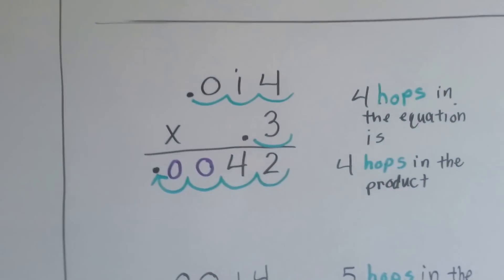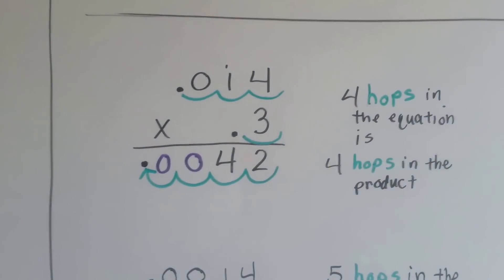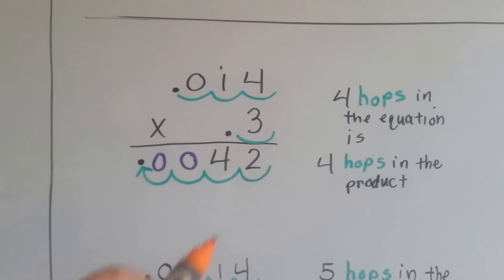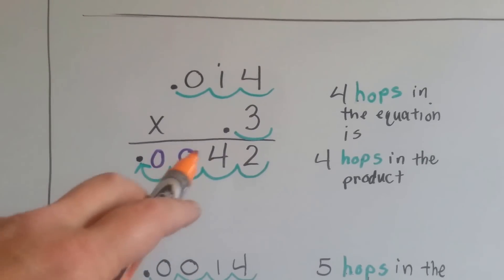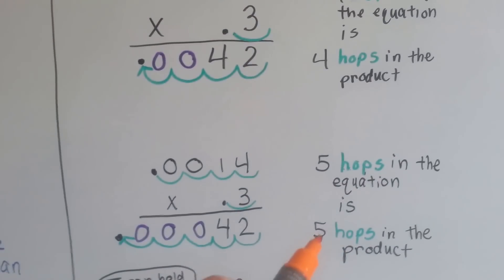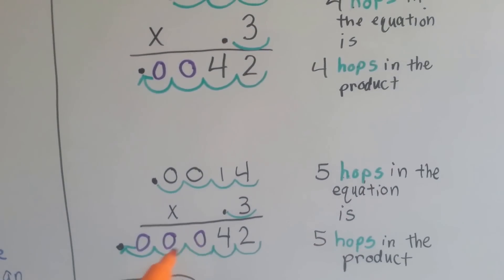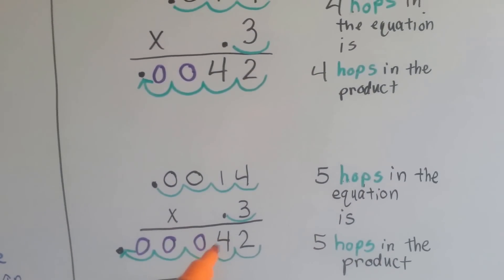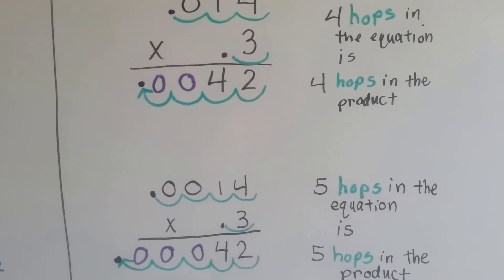When we have four hops in the equation, there's four hops in the product. Now we had to put two zeros in there to keep the four from sliding over. Five hops in the equation is five hops in the product. I had to stick three zeros in there to keep the four from sliding over to the decimal point.